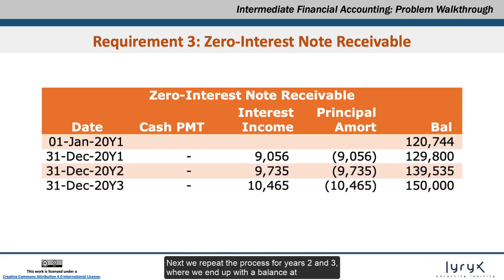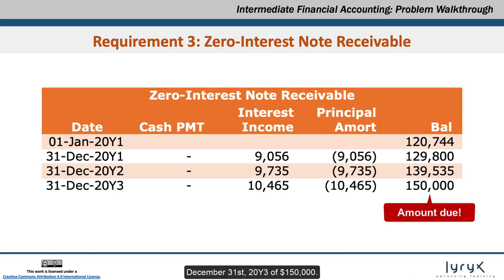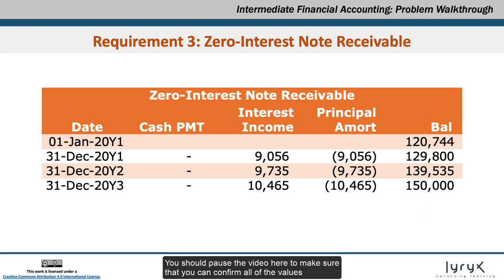We repeat the process for years 2 and 3, where we end up with a balance at December 31, 20Y3 of $150,000. You should pause the video here to make sure that you can confirm all of the values in the amortization table.